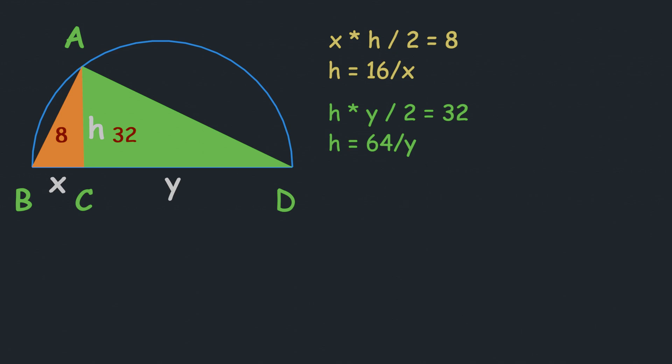We can see h has two values, so we can write 16/x = 64/y. If we multiply both sides by xy and divide by 16, we get y = 4x. Now we have y in terms of x.